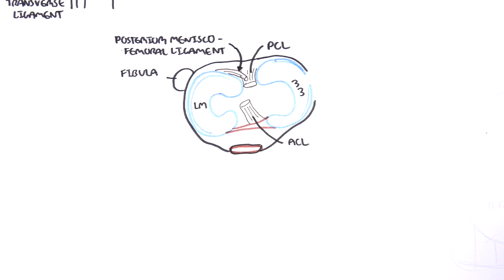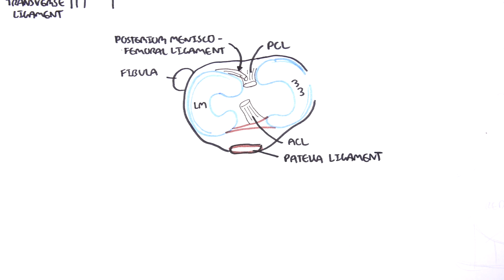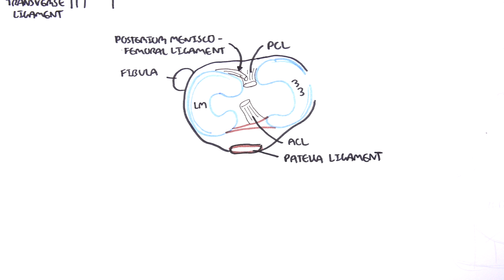Then again, here is the front, and here is where you have the patella ligament which will eventually attach to the tibial tuberosity.